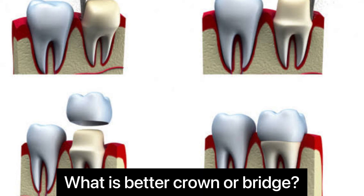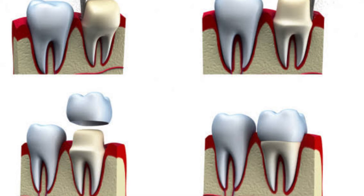What is better — a crown or a bridge? Here is a simple way to decide: if the tooth is damaged but can still be used, a crown is probably best. If the tooth is missing or must be removed entirely, a bridge is probably best.